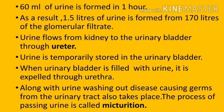To remember: about 127 ml of glomerular filtrate is formed every minute. Out of this, 126 ml is reabsorbed into the blood, so 1 ml of urine is formed per minute — 60 ml per hour and 1.5 litres per day.